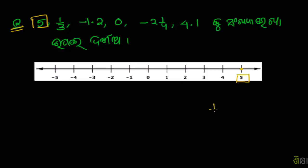This is the number line. The number line is 0.33. The number line is positive. 1 is 0.33.